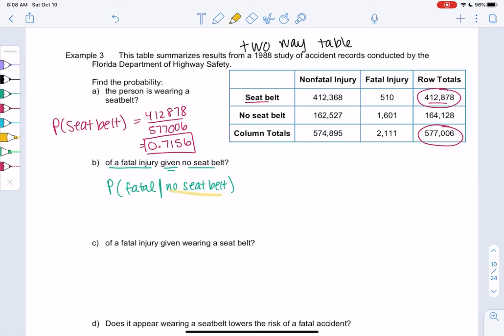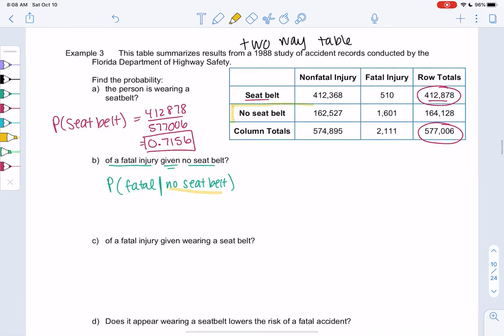We're going to set no seatbelt as our total, so I'm going to go to the no seatbelt row and ignore everything else. My new total will be 164,128. Basically everyone without a seatbelt is my total. I'm no longer looking at everyone. Put 164,128 in the denominator, and then 1,601 of those were fatal.